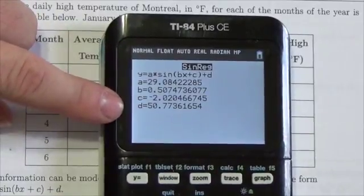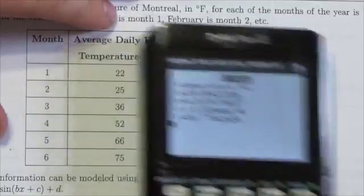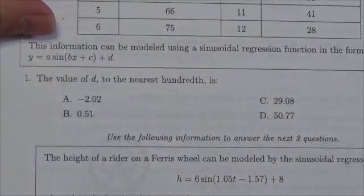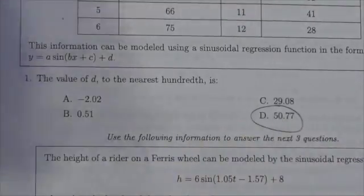And so now we get here that our D value, which is what we're looking for, is 50.77. We look at our options here, and there it is, 50.77. That's the number we're looking for.